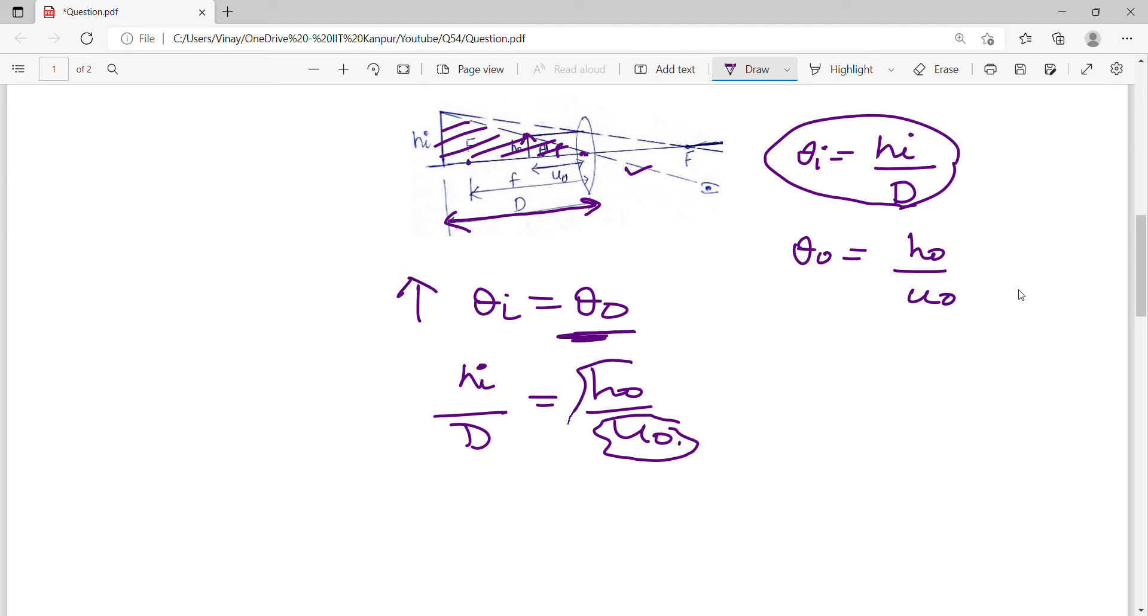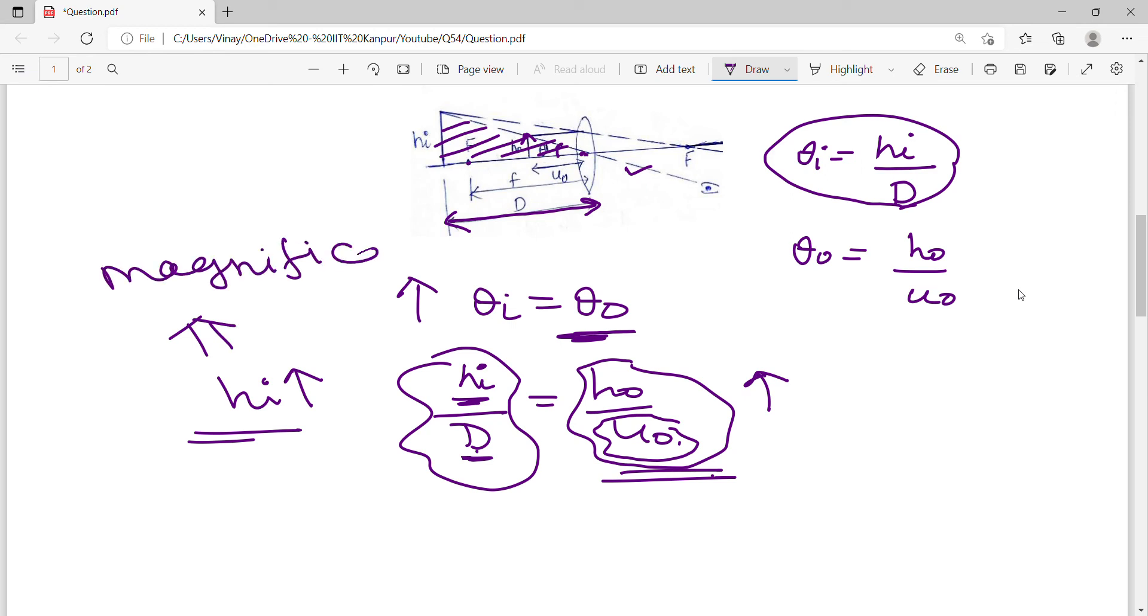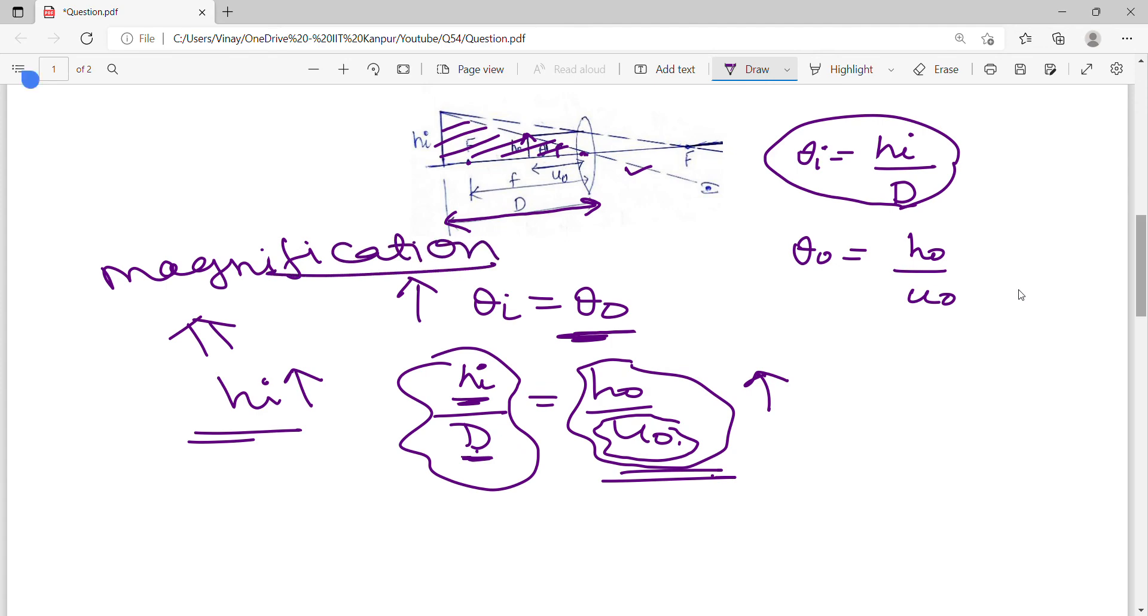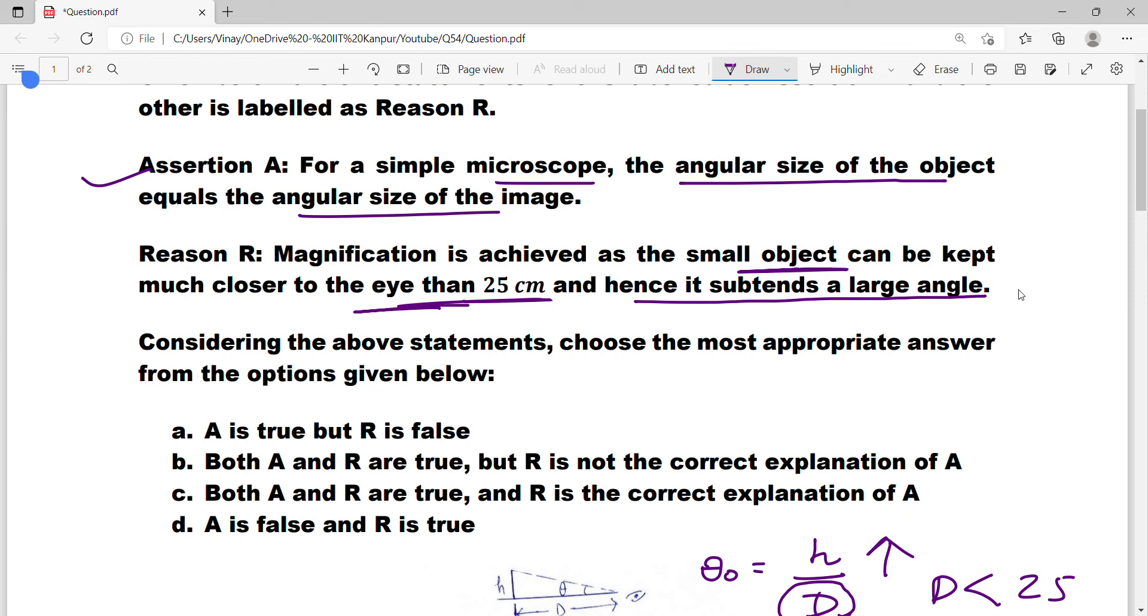U_naught denominator decreases, so this whole value increases. If the right-hand side increases, the left-hand side also increases. On the left-hand side, d is the same, so what increases? h_i increases. If d is the same and the right-hand side is being increased, h_i will increase. h_i increasing means you have achieved magnification. That is what the second option is saying: magnification is achieved as the small object can be kept much closer to the eye. We are achieving magnification by keeping the object at less than 25 cm, and because of this, it subtends a large angle, which means the height of the image is large, which is magnification.